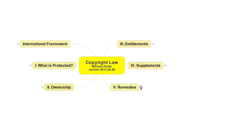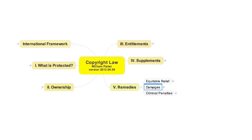There are three types of remedy for copyright infringement: equitable, legal, and criminal. The first two types are available to the prevailing plaintiffs in civil suits. A copyright owner who, in a civil lawsuit, successfully demonstrates that a defendant has engaged in copyright infringement may obtain either or both equitable or legal remedies. In addition, a person who engages in some types of copyright infringement may be prosecuted by the government and, if convicted, subjected to criminal sanctions.